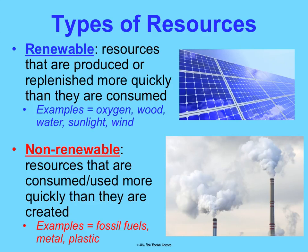Resources can change categories. Water is currently renewable, but if we polluted too much water, it could become a non-renewable resource. So they can fluctuate, but in general these are current examples of each type. One of the ways that we can live sustainably is by using resources that are renewable — ones we're not running out of.